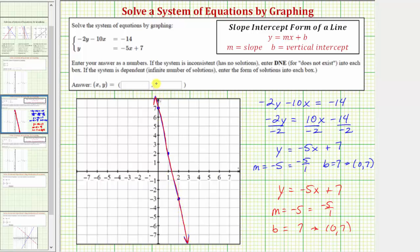And because they have an infinite number of points in common, there's an infinite number of solutions. So going back up to our directions, notice how we're told if the system is dependent, meaning it has an infinite number of solutions, we enter the form of solutions into the box. And there are a variety of forms we can use, but because we're given this equation here in slope-intercept form, y equals negative 5x plus 7,